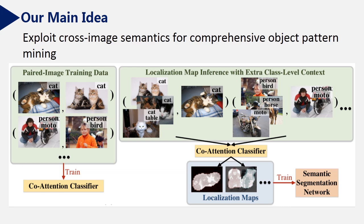After obtaining co-attention classifier, we generate localization maps, shown in the right. Specifically, for one image, we use several extra images which contain common objects as reference for discovering more competent object regions.